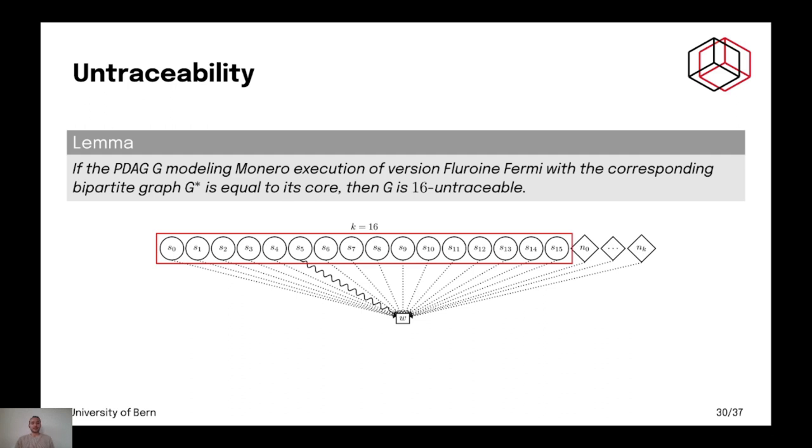Now, if the PDAG modeling Monero execution of version Flora and Fermi corresponding bipartite graph G star is equal to its core, then G is 16 untraceable. So, that means that this version of the Monero execution is at most 16 untraceable because we would have to check if this graph G star is indeed equal to its core.